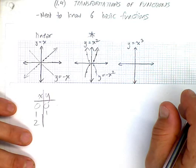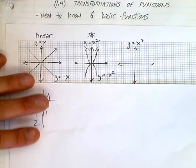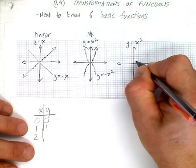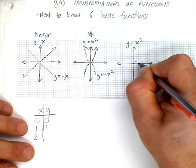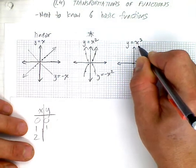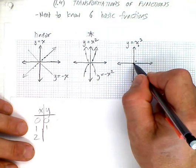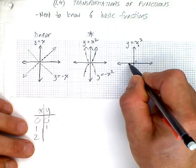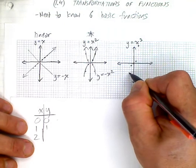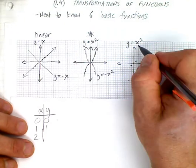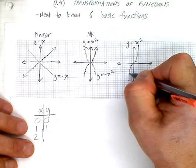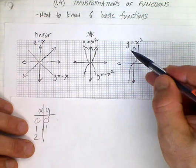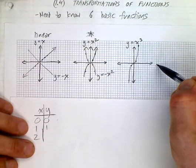Here's a cubic function. When x is 0, y is 0. When x is 1, y is 1. When x is 2, y is 8. And we have the same thing on this side. When x is negative 1, because we're cubing, it remains negative. Negative 1, negative 8. And you have a cubic function that looks like that. If you want a negative cubic, it ends up flipping over the x-axis again.